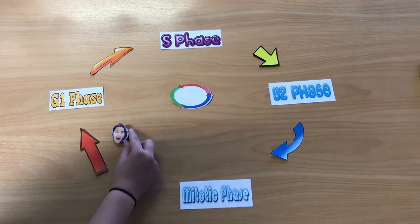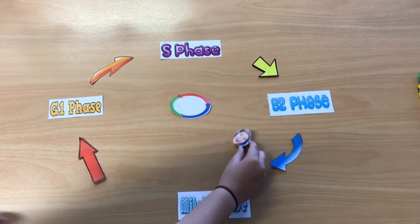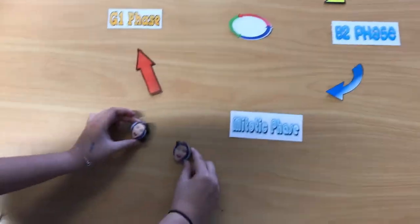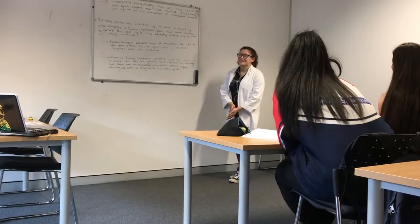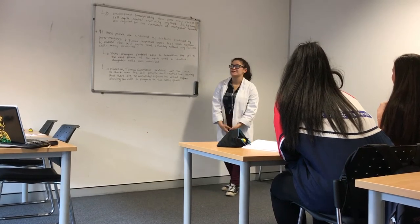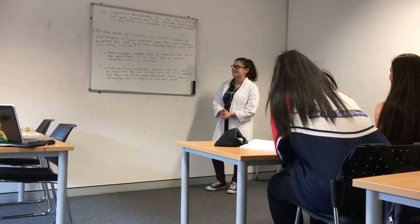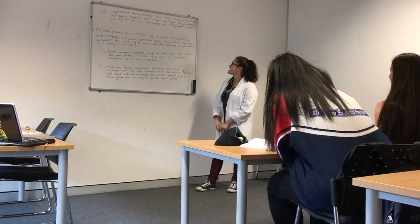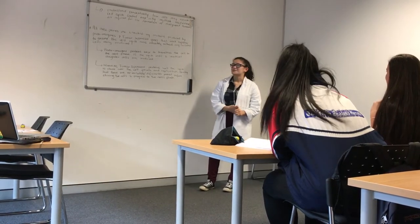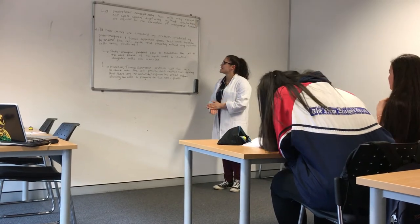The cells in the cell cycle migrate through each phase, producing two identical daughter cells. All these phases are checked by proteins produced by proto-oncogenes and tumor suppressor genes that work together to ensure the cell cycle runs smoothly without developing any mutations in the daughter cells.